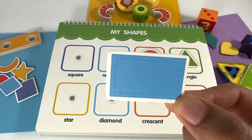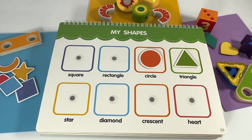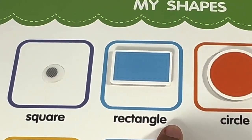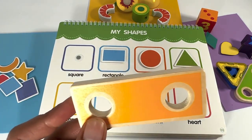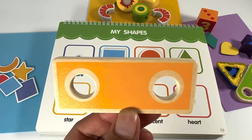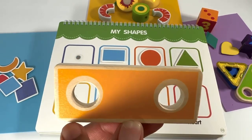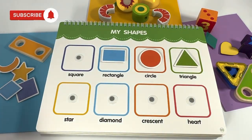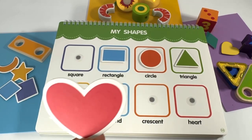Rectangle — rectangle starts with the letter R. Can you find any shape here that starts with the letter R? Right here — our rectangle. Can you find any shapes at home that look like a rectangle? This is what I found. Did you also notice that rectangle has four sides — two long sides and two short sides? One, two, three, four.